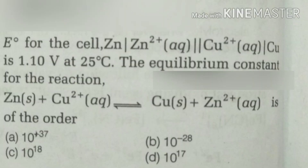Next question. E0 for the cell Zn | Zn2+ || Cu2+ | Cu is 1.10 volt at 25 degrees Celsius. The equilibrium constant for the reaction Zn plus Cu2+ gives Cu plus Zn2+ is of the order...